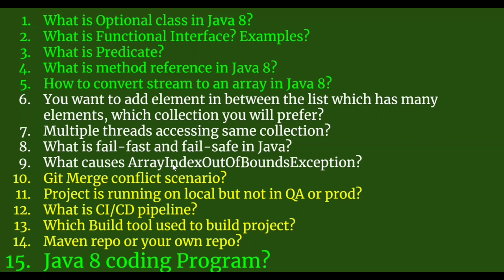What is meant by fail-fast and fail-safe iterator in Java? While iterating through a collection, if some other thread tries to modify that list, a ConcurrentModificationException is thrown — this is fail-fast. Fail-fast means whenever a collection you are iterating has structural changes, your code should fail. Fail-safe is where you are given a copy of the collection to iterate, so the underlying structural change does not hamper your iteration. ArrayList and LinkedList are fail-fast; ConcurrentHashMap and CopyOnWriteArrayList are fail-safe.